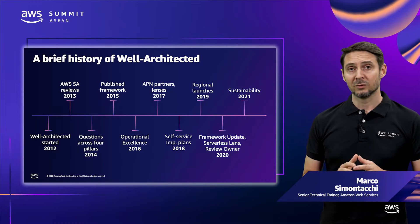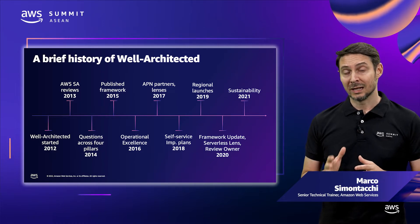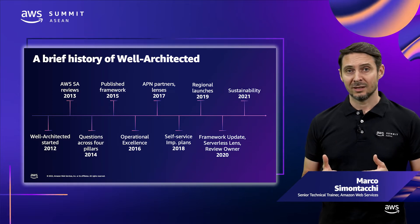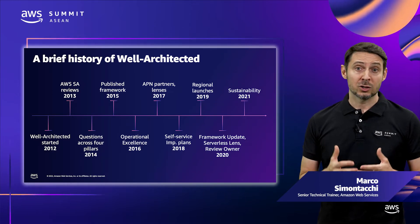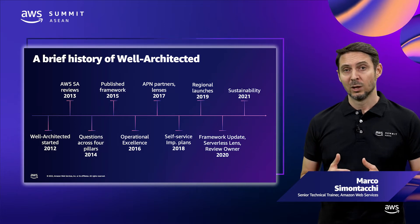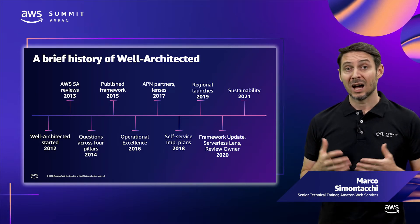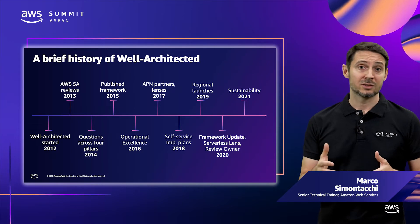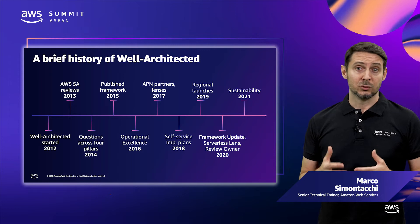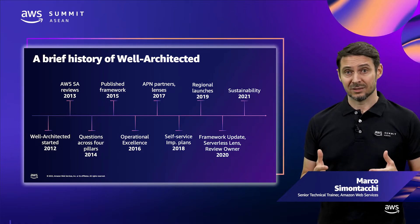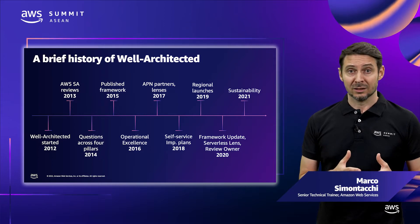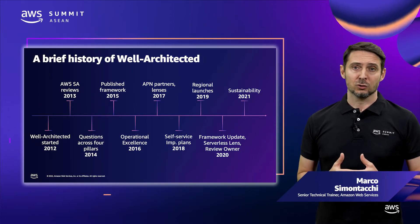In 2015, AWS published the AWS Well-Architected Framework. In 2016, AWS added the Operational Excellence pillar. In 2017, we started to educate our partners on how to apply Well-Architected to the systems they were building. Furthermore, AWS introduced the concept of Well-Architected Lenses, which extend the guidance offered by the AWS Well-Architected Framework to specific industry and technology domains.